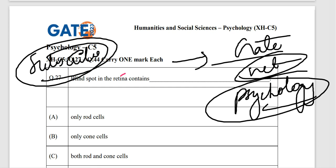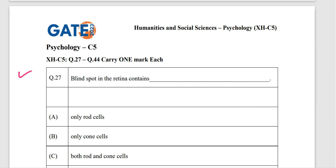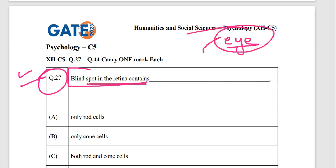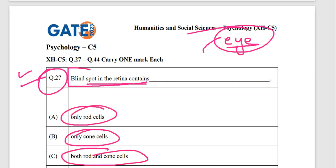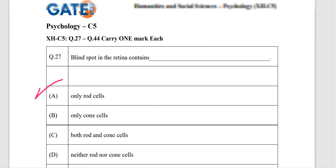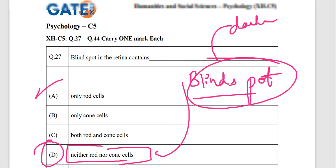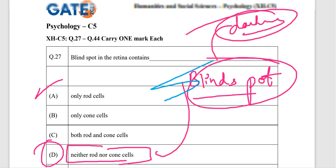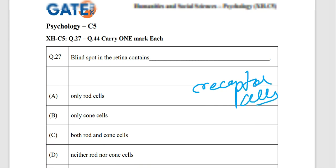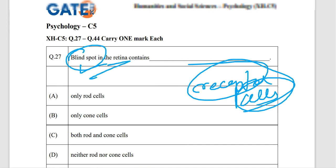The first question is about the blind spot in the retina — which type of cells does it contain? Only rod cells, only cone cells, both rod and cone cells, or neither? The correct answer is option D: neither rod nor cone cells. In the blind spot there is complete darkness, no receptor cells, no information — that's why we call it the blind spot in the retina.